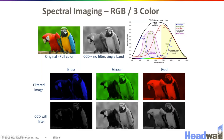There is a blue filter that only collects light in the blue region of the spectrum, a green filter that only collects light from the green region of the spectrum, and a red filter that only collects light from the red region of the spectrum. The pixels on the camera each have one of these filters over them.